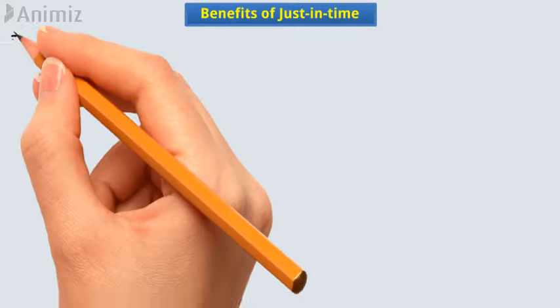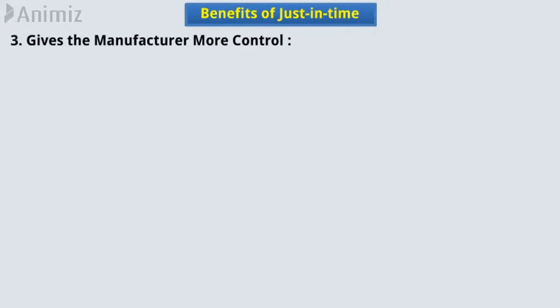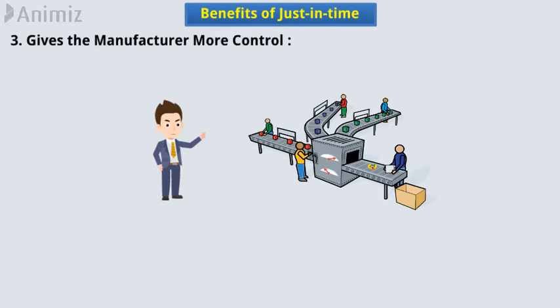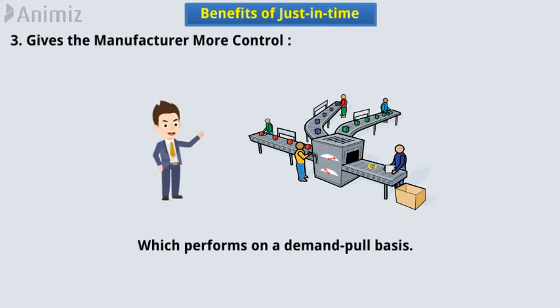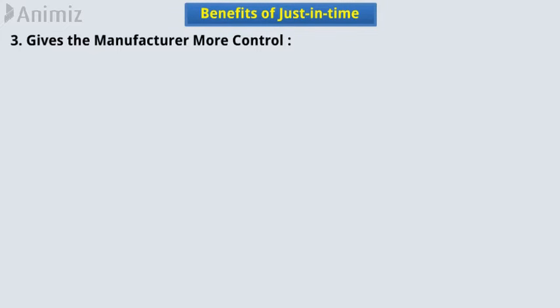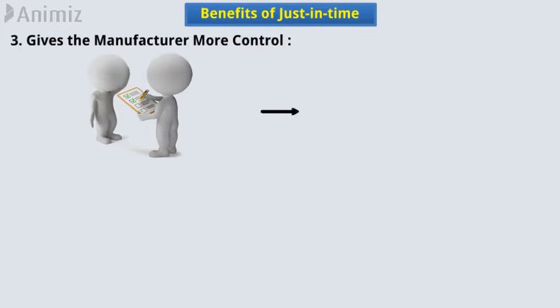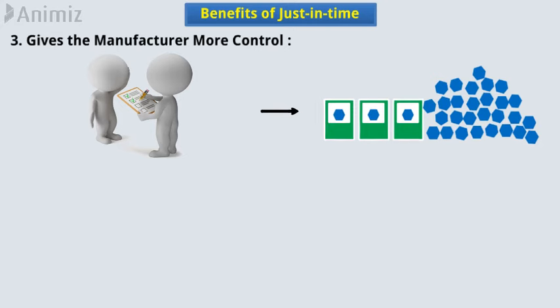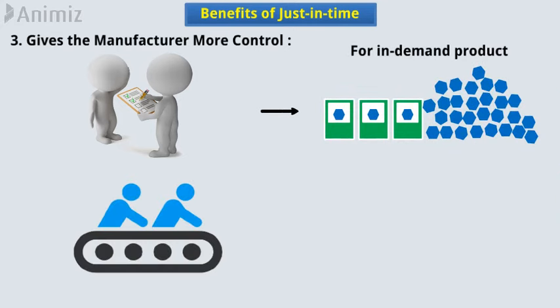3. Gives the manufacturer more control. In Just-in-Time, the manufacturer has entire control over the manufacturing process, which operates on a demand-pull basis. They can respond to customers' requirements by quickly boosting production for an in-demand product and decreasing production for slow-moving items.